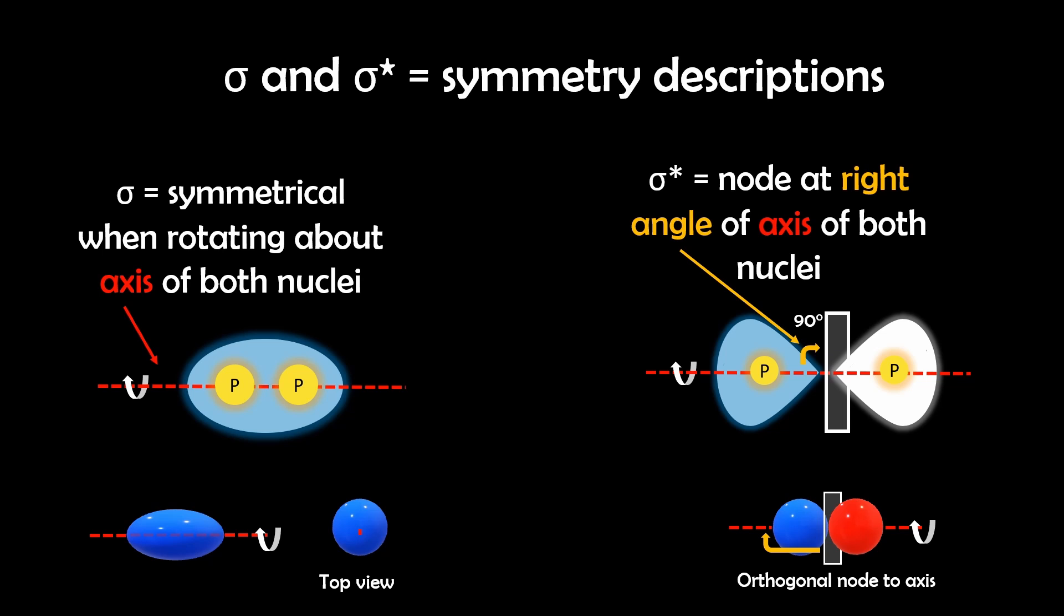Now moving on to the labels we use for molecular orbitals like sigma and sigma star. These are descriptions of their symmetry. Sigma means the orbital is symmetric around the axis connecting the nuclei. So rotating it doesn't change its phase or symmetry. The asterisk indicates an antibonding orbital with a nodal plane that is orthogonal or at a right angle to the internuclear axis. And these symmetry labels help us understand and predict molecular behavior in a systematic way.